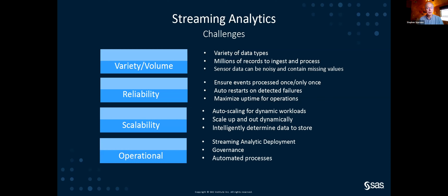We also need to develop streaming analytics quickly and deploy models, but also govern them. How do we monitor how well models are performing? Are we seeing degradation in lift? Models are built with certain assumptions about how data looks. If those assumptions are challenged — because machines age or people's behavior changes — we need to monitor whether the data is changing and whether the model is still the best. Automated processes should push newer, better trained models out.